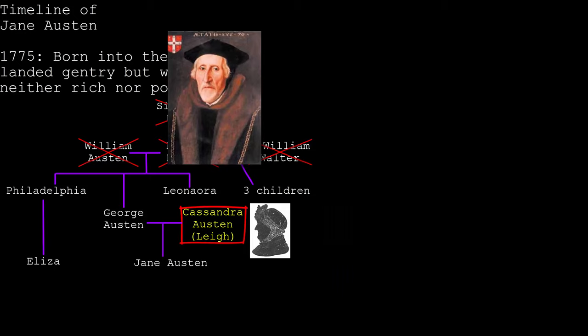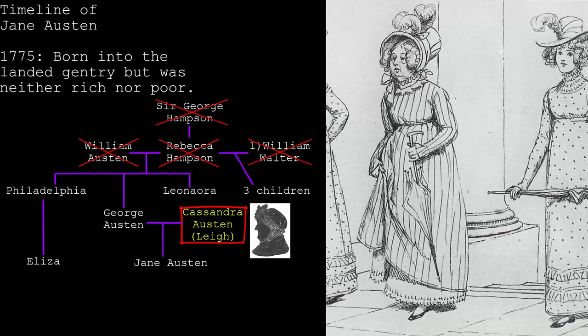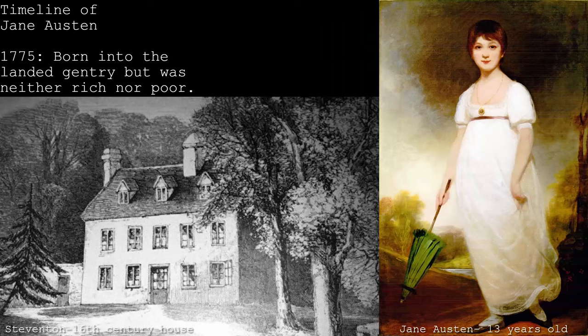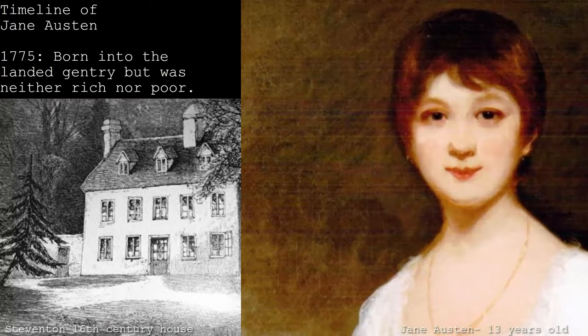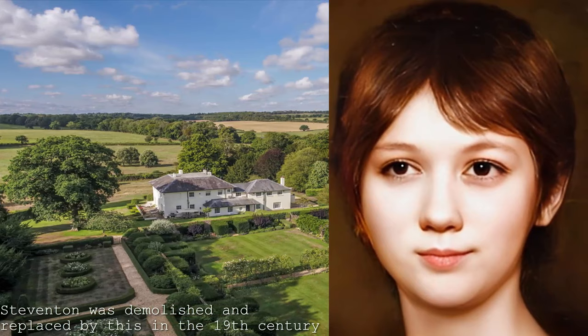Cassandra Leigh, the daughter of a clergyman, was a comparatively poor relation but kept in touch with some of her wealthier family members. Mrs. Austen wasn't afraid to get her hands dirty — we might even consider her a working mother. At Jane Austen's childhood home of Steventon, Mrs. Austen, as well as raising eight children, was something of a farmer, taking care of poultry, running a dairy, brewhouse, and granary. Jane was born here in Steventon Rectory, the seventh of eight children, in 1775.